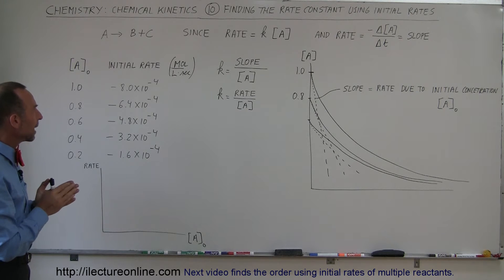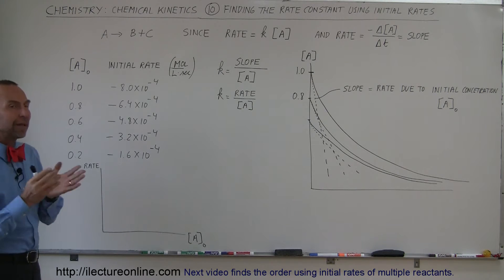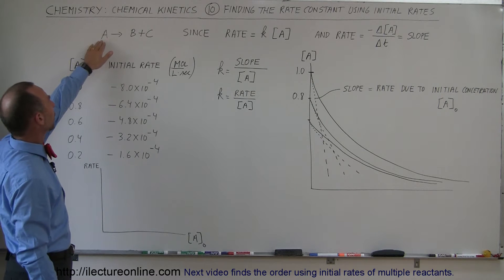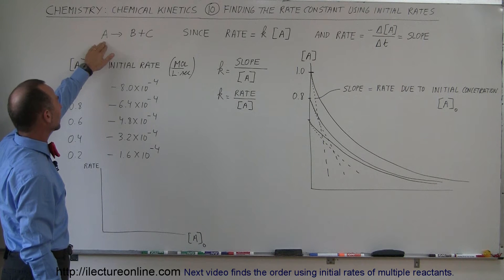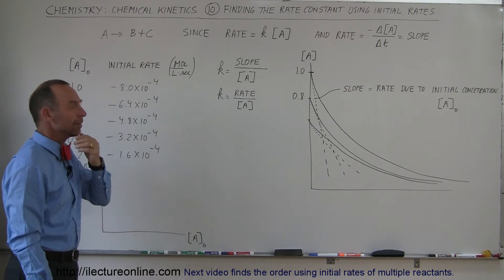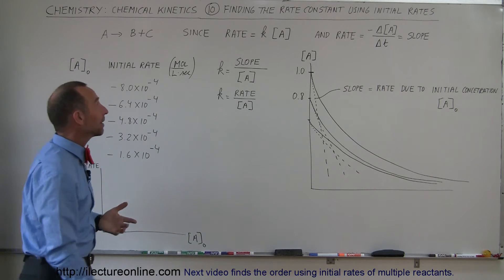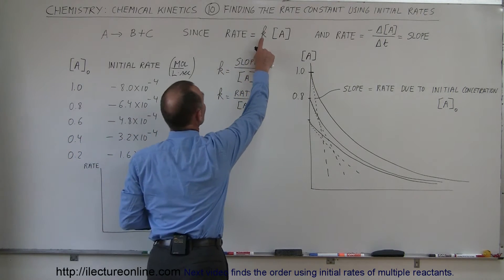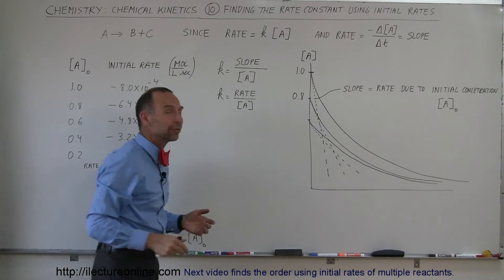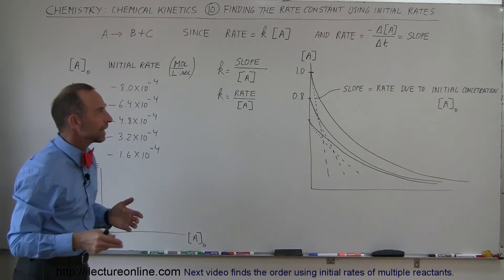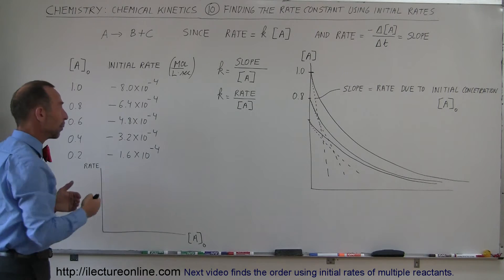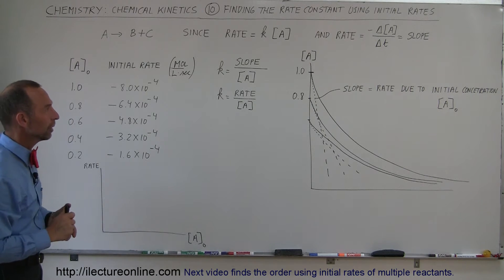The way we do that is go back to our basics. Let's say we have a very simplistic reaction where we have a reactant A turning into B and C. Since we know that the rate is equal to the reaction constant times the concentration of A — and of course that's assuming that this is A to the first order — in this case I set up an example where it is first order.